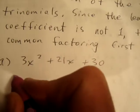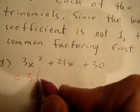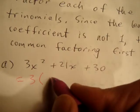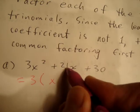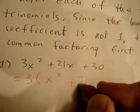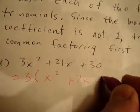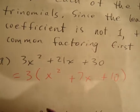Our first question is 3x² + 21x + 30. When we common factor out the 3, we realize that 3x² divided by 3 is x², 21x divided by 3 is 7x, and 30 divided by 3 is 10. We keep the signs the same.